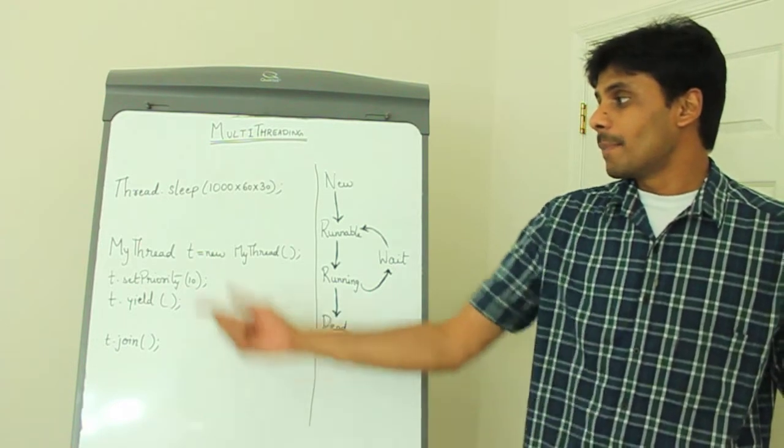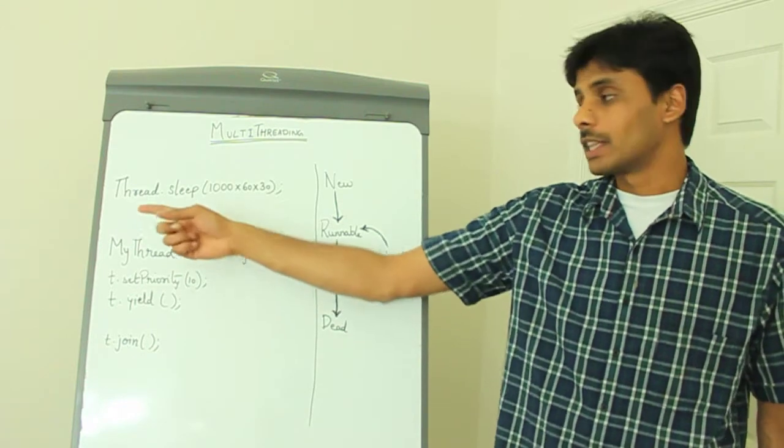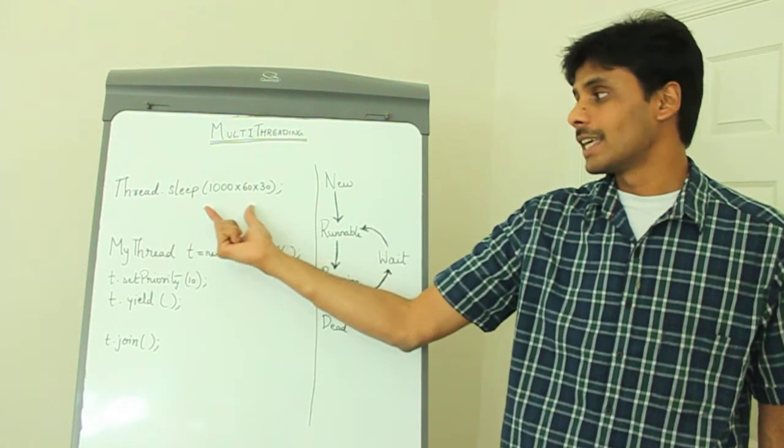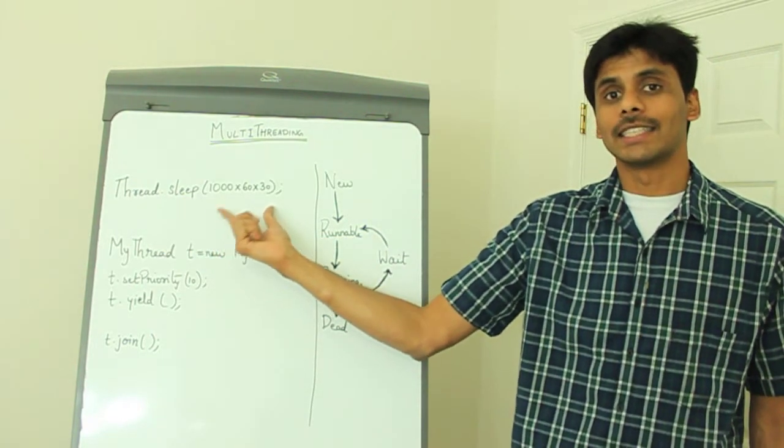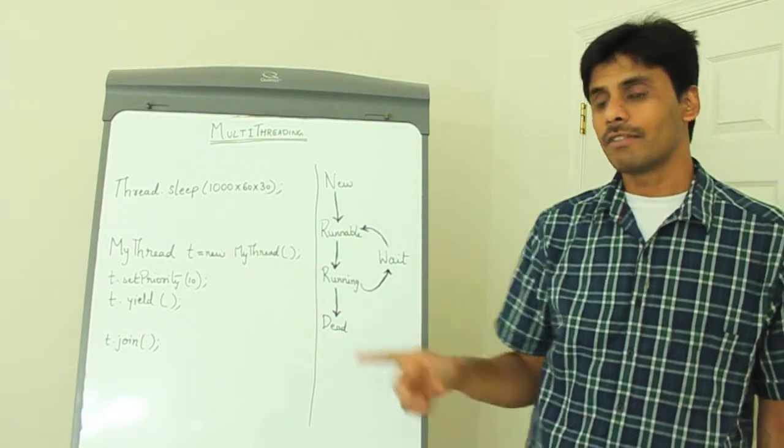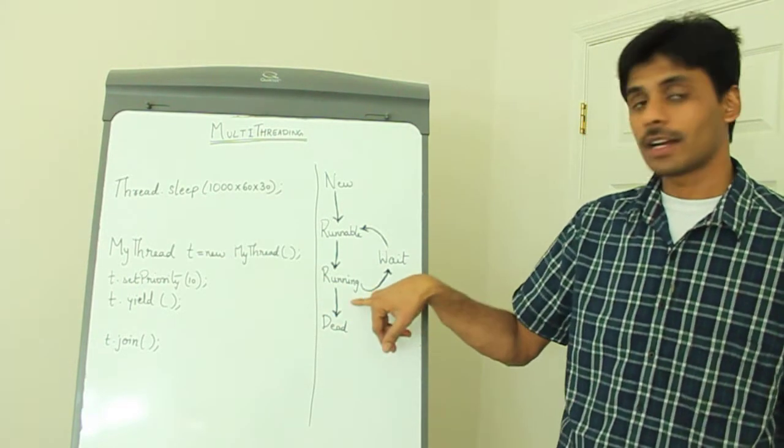When you know of the sleep method, which is a static method on the thread class, by passing in the number of milliseconds that the thread should wait, the thread will be moved to a wait state from the running state.